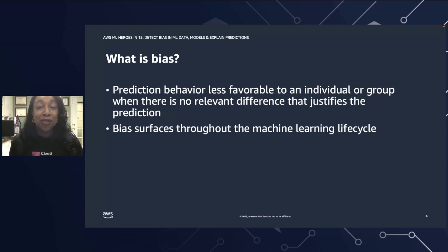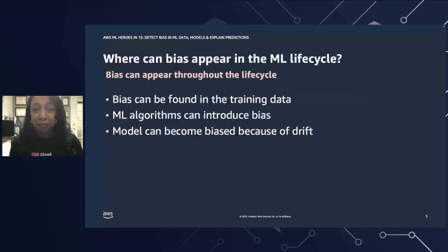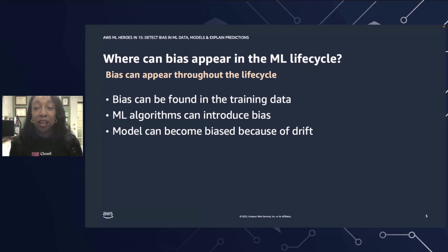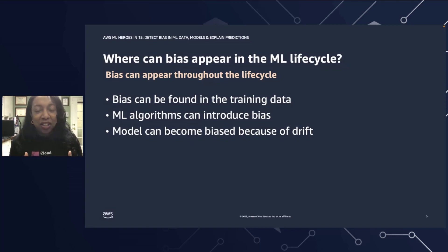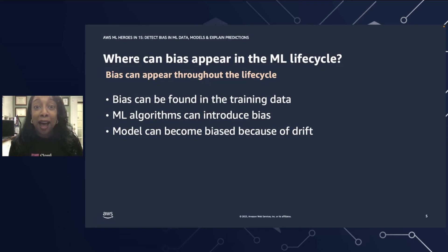Bias can actually surface throughout the machine learning life cycle. Bias can be found in your training data — if your data set is imbalanced or if it doesn't accurately represent the environment that the model will be deployed in, that could be bias. Bias also shows itself in the machine learning algorithm. Even with a well-balanced training data set, the outcome might favor certain subsets of the data compared to others. And lastly, bias can actually show up in your trained model because of drift. Once you have a model that's in production, the data changes and the relationships between your target and your other variables can change over time, which degrades the predictive power of your machine learning model.